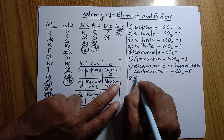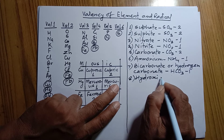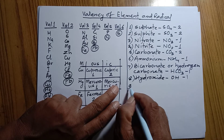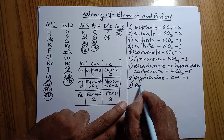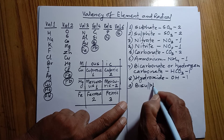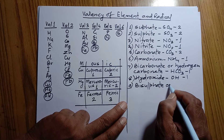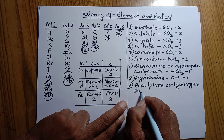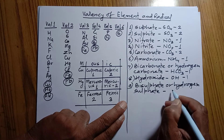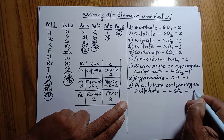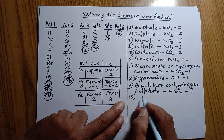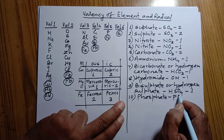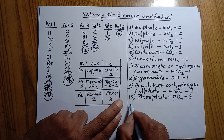Hydroxide (H-Y-D-R-O-X-I-D-E): its formula is OH, valency is 1. Bisulfate — also called hydrogen sulfate (H-Y-D-R-O-G-E-N sulfate): its formula is HSO₄, valency is 1. Phosphate (P-H-O-S-P-H-A-T-E): its formula is PO₄ and its valency is 3.